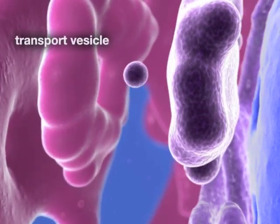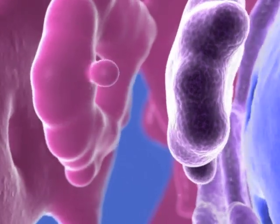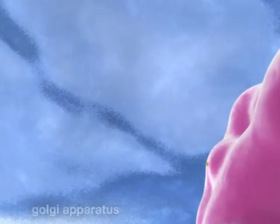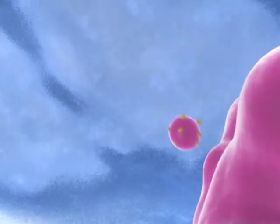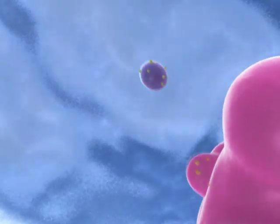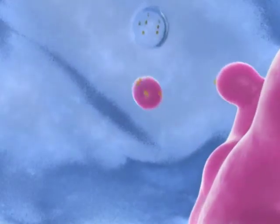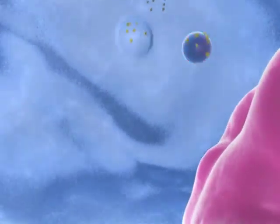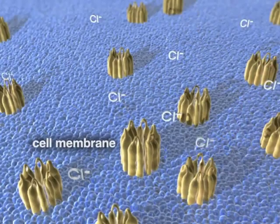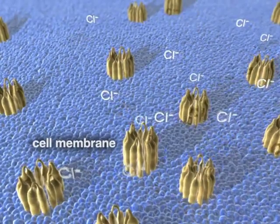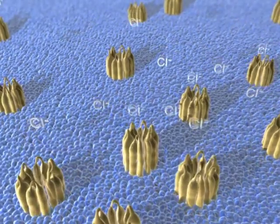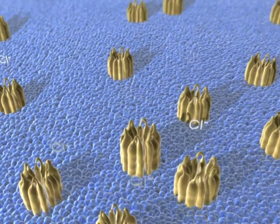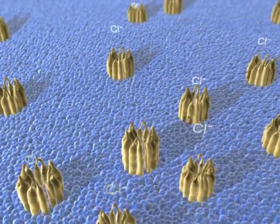CFTR is then transferred to the Golgi apparatus. From the Golgi, transport vesicles are created and the CFTR protein is transported to the cell surface membrane. This process is also known as trafficking of CFTR.